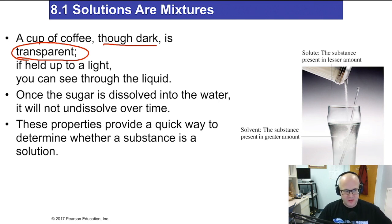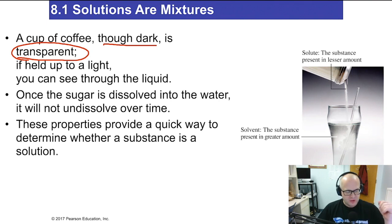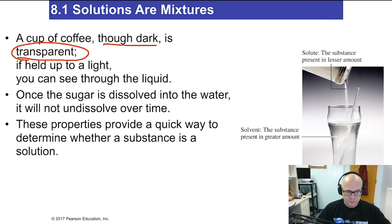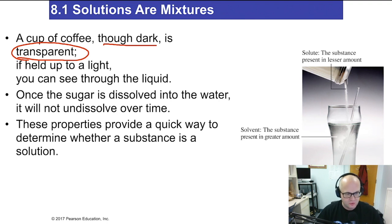Kool-Aid is a great example of a solution. Kool-Aid is made of water, sugar, and the Kool-Aid package. Water is obviously the solvent, the Kool-Aid package is a solute, and the sugar is a solute. Those three things go together to make up the solution, Kool-Aid. Kool-Aid always has a color — green, purple, red, orange — but these are all solutions because you can see through them all. You can't see the solute anywhere; it's dissolved into the solution.